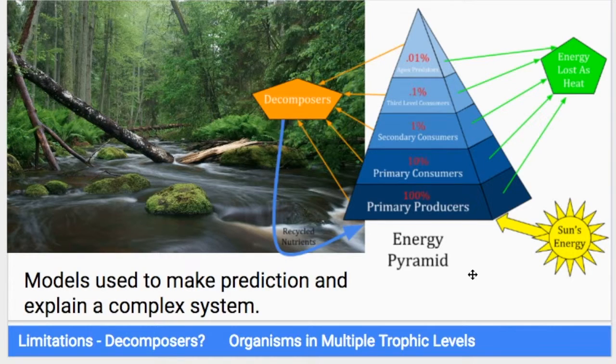I want you guys to pay attention to models, to the model that is an energy pyramid. Models are used to make predictions. They're also used to explain complex systems. An ecosystem is very complex. But when you're talking about energy flowing through an ecosystem, you can use a more simplified model like an energy pyramid. When you make this energy pyramid, you can describe how much energy is being lost at each step and how much energy is being transmitted along each trophic level. And you can also show how the decomposers cycle the matter back around.